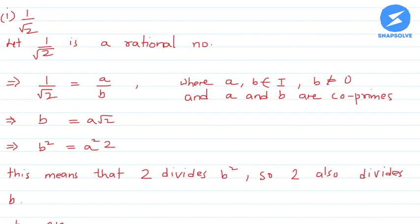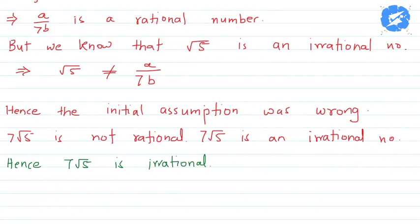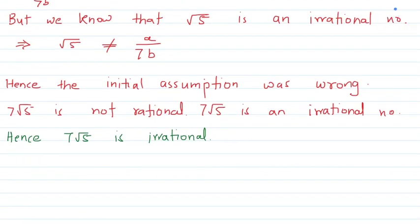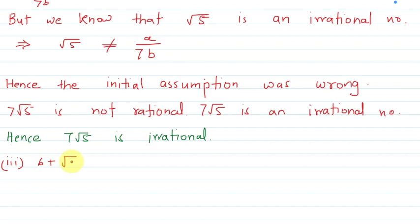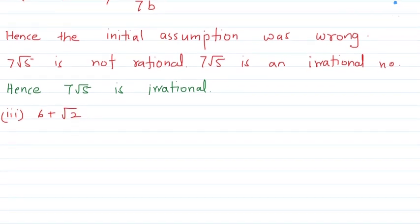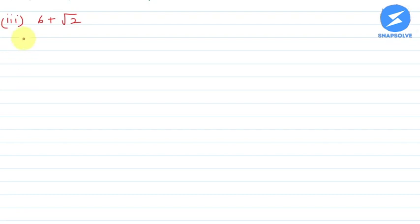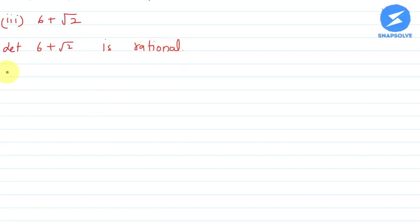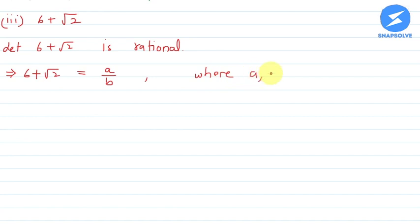Now let's move to the third option: 6 plus root 2. I will prove it now. Let us assume that 6 plus root 2 is rational. That means 6 plus root 2 can be expressed in the form of a upon b, where a and b belong to integers, b is not equal to 0.